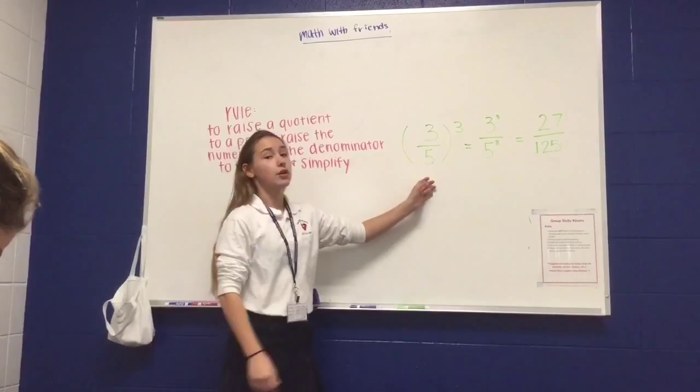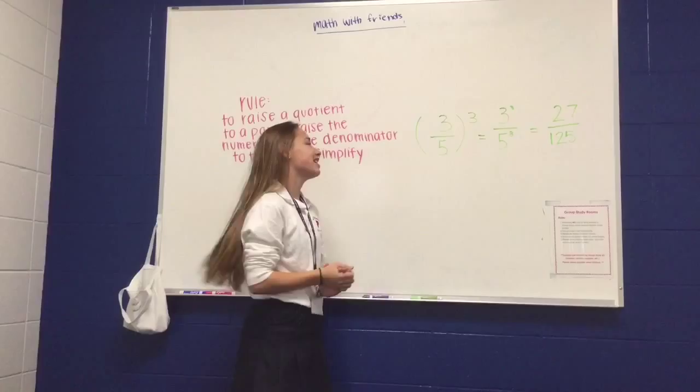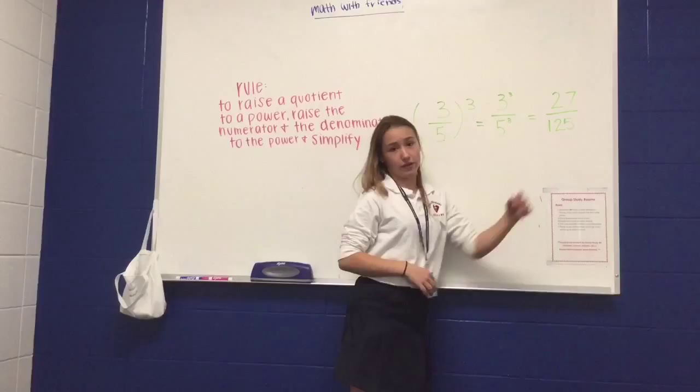Easy. We just apply this exponent to both the numerator and the denominator. So, what we get is three to the third power over five to the third power. Now, we simplify that even more. Three times three times three is 27. Five times five times five is 125. That's it.